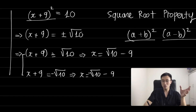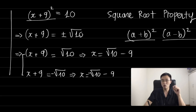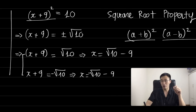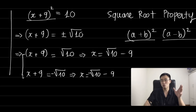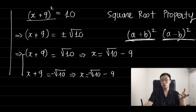In the last session we were able to use the square root property to solve equations like (s+9)² = 10. Because the left side was a perfect square, it was easy to apply the square root property. But if the left-hand side is a perfect square polynomial, you need to rewrite it in the form (a+b)² or (a-b)² in order to use the square root property.